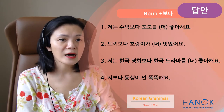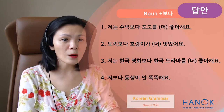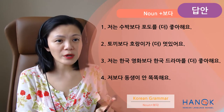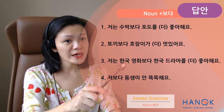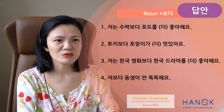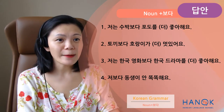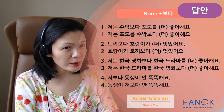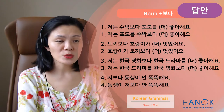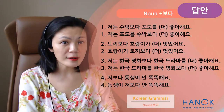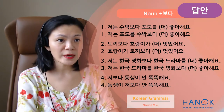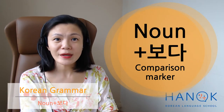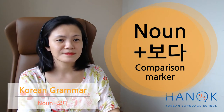3번: 저는 한국 영화보다 한국 드라마를 더 좋아해요. 4번: 저보다 동생이 안 똑똑해요. 여기, comparing to me — 동생이 not clever — 안 똑똑해요. In this case, you don't use 더 — it's just comparing to me, she's not clever. You can also say it the other way around — same meaning이에요. As long as the markers are put correctly, the sentences mean the same thing. 그럼 여기까지입니다. 감사합니다, 고맙습니다.